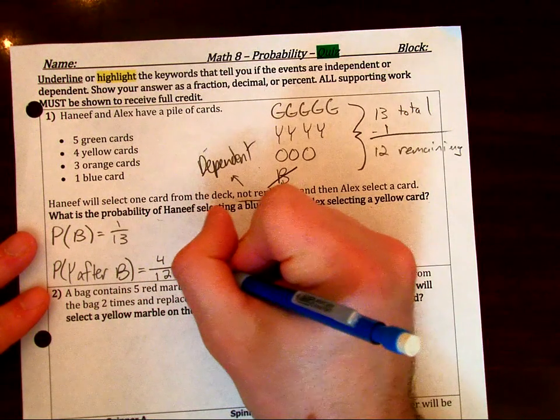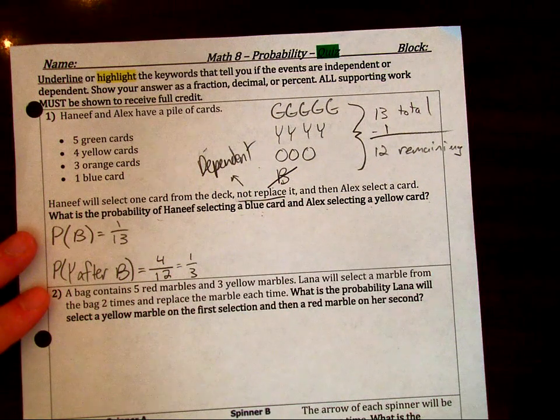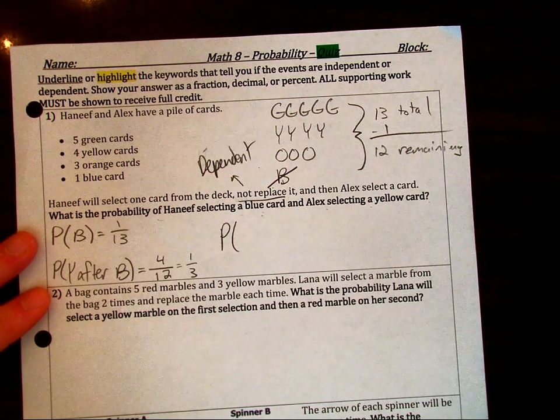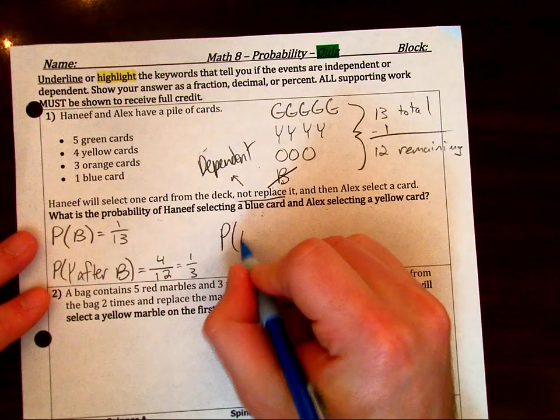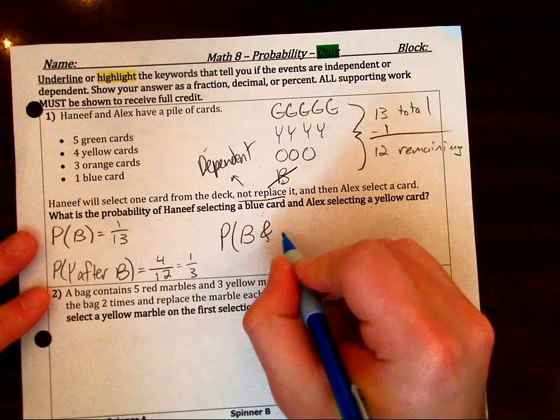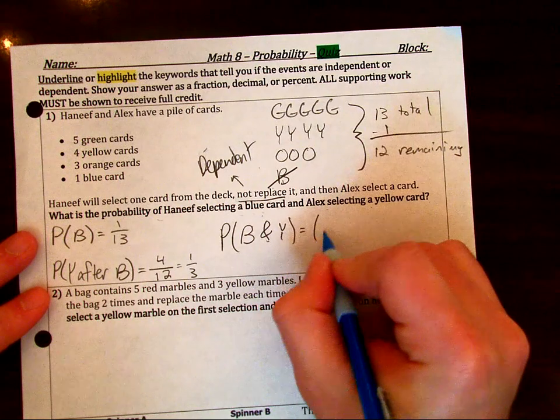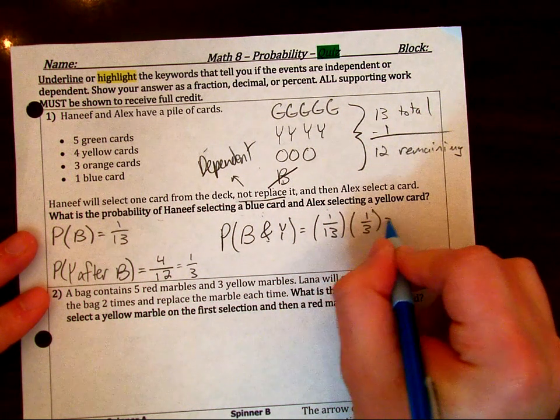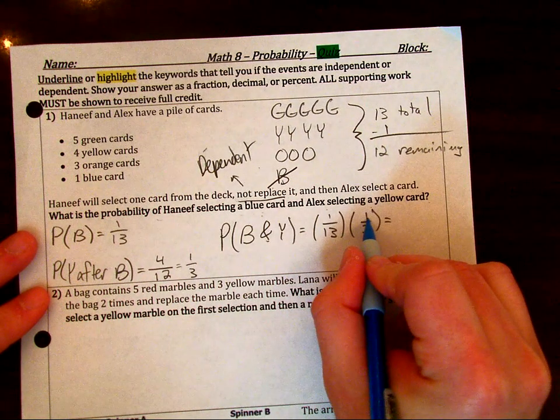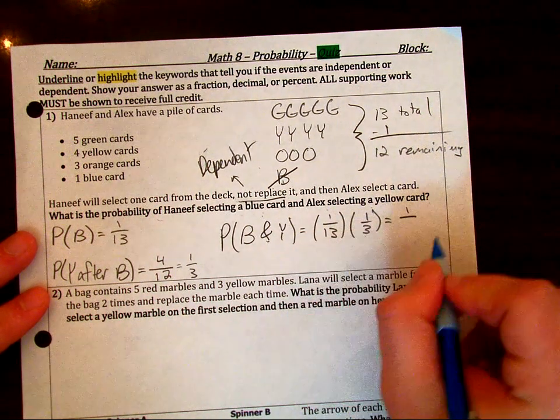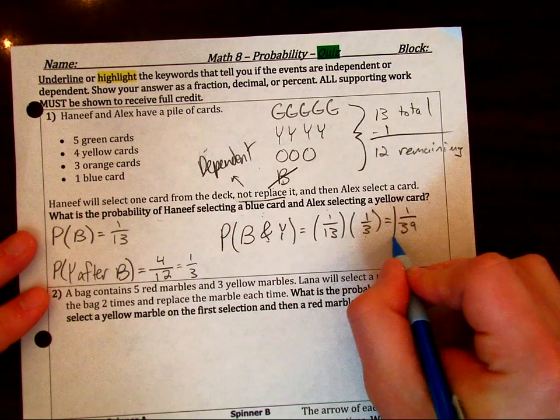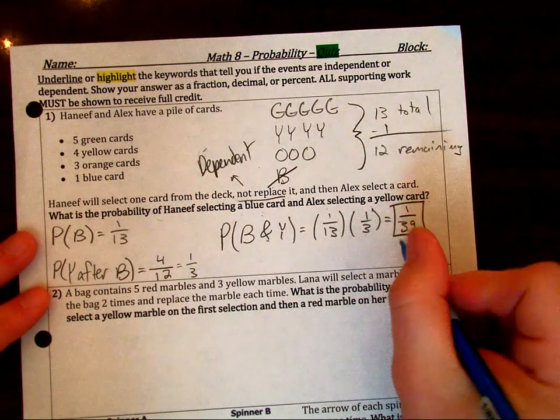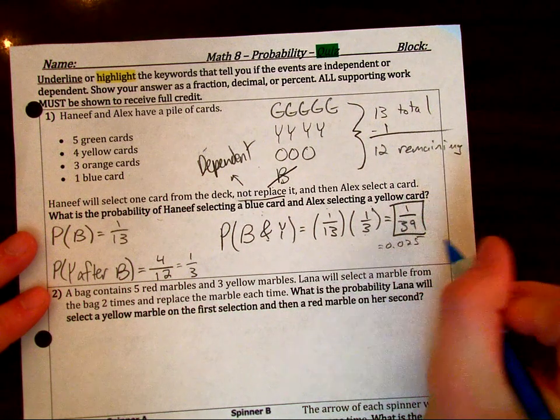Now the probability of picking a yellow after we took a blue out. When you take it out, you can cross it out or erase it. As long as you're saying that this is 12 remaining. So that means our second denominator is going to be 12. How many yellows are there? There are four. And so we can simplify this fraction before we multiply it. This is going to be one third.